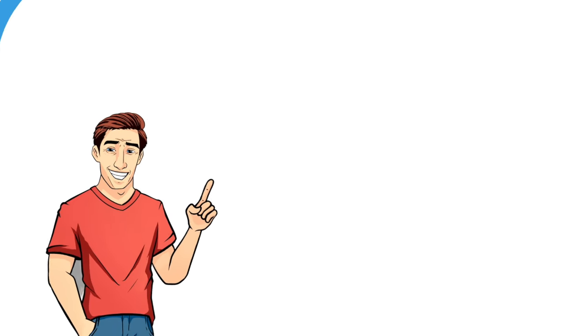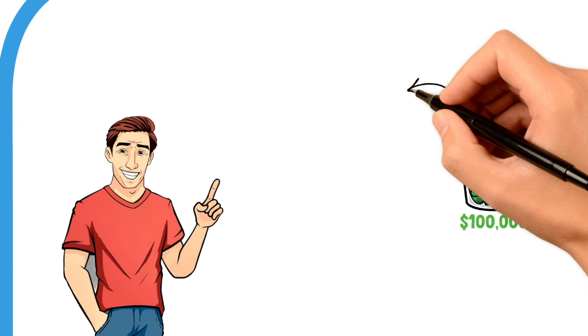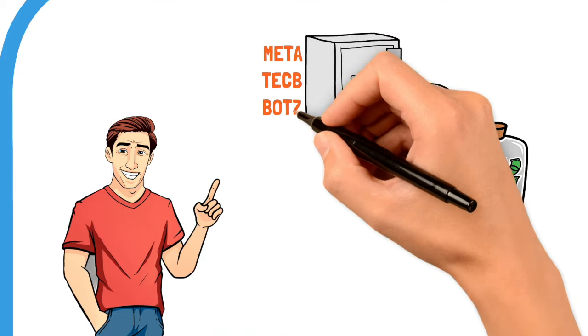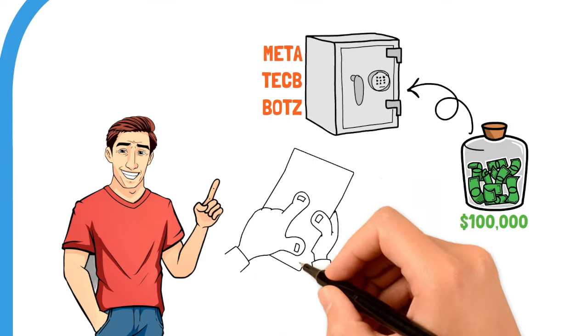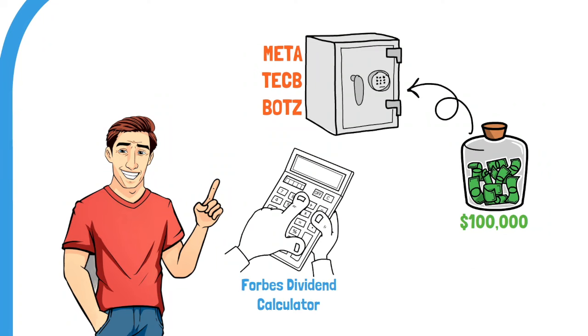So now, let's calculate the potential returns of a $100,000 investment in each of our top AI ETFs: META, TECB, and BOTZ. I'll use the Forbes Dividend Calculator to estimate how these investments could grow over 10, 20, and 30 years, considering both stock price appreciation and dividend reinvestment.